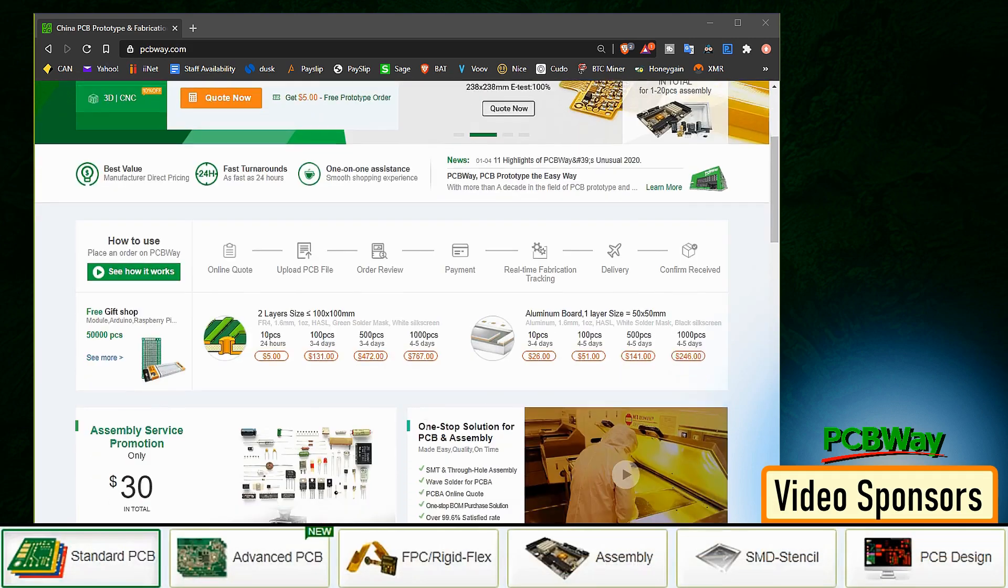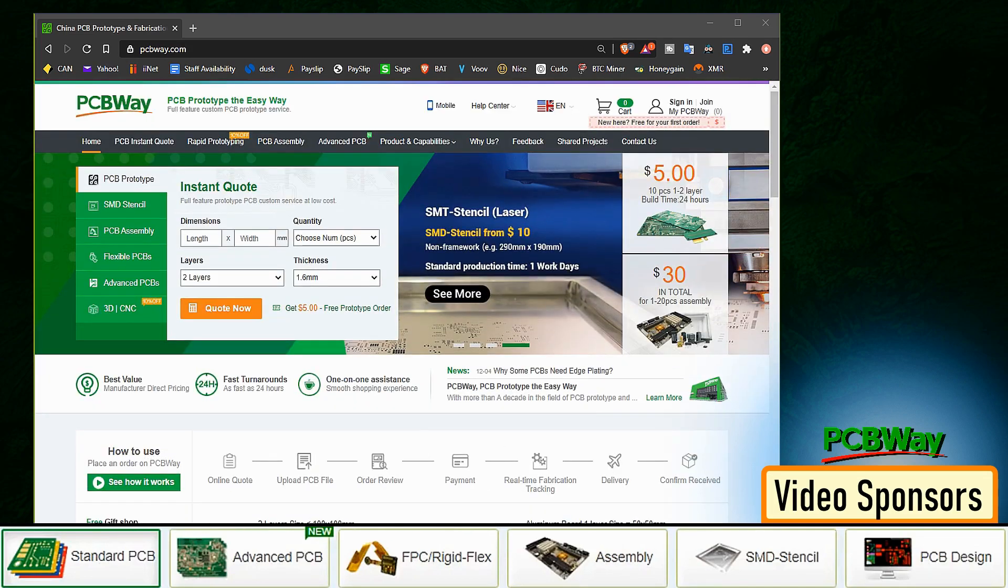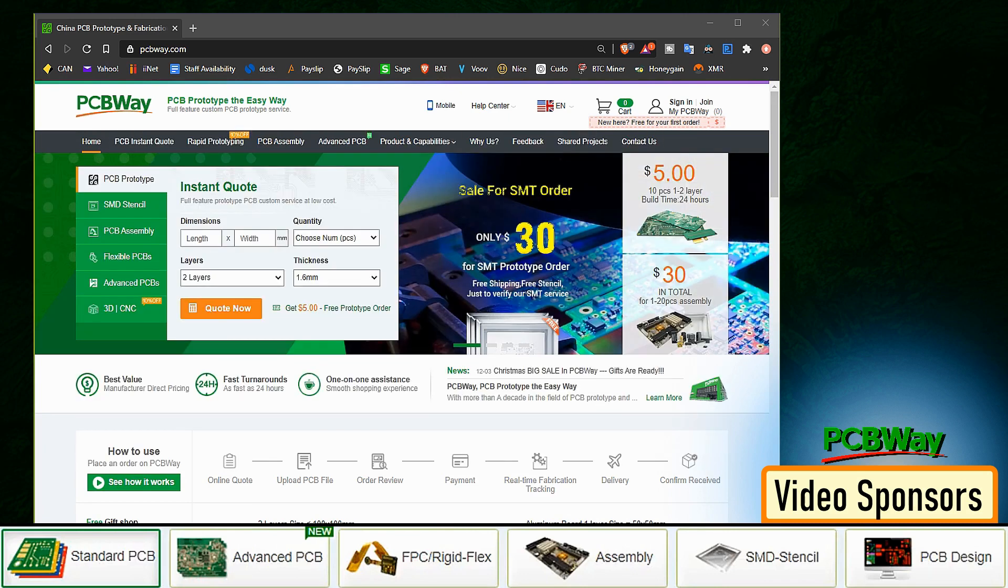In addition to standard PCBs, you can order advanced PCBs, aluminum PCBs, and rigid flex PCBs. They also provide PCB assembly and other related services which can meet your need at the greatest extent.